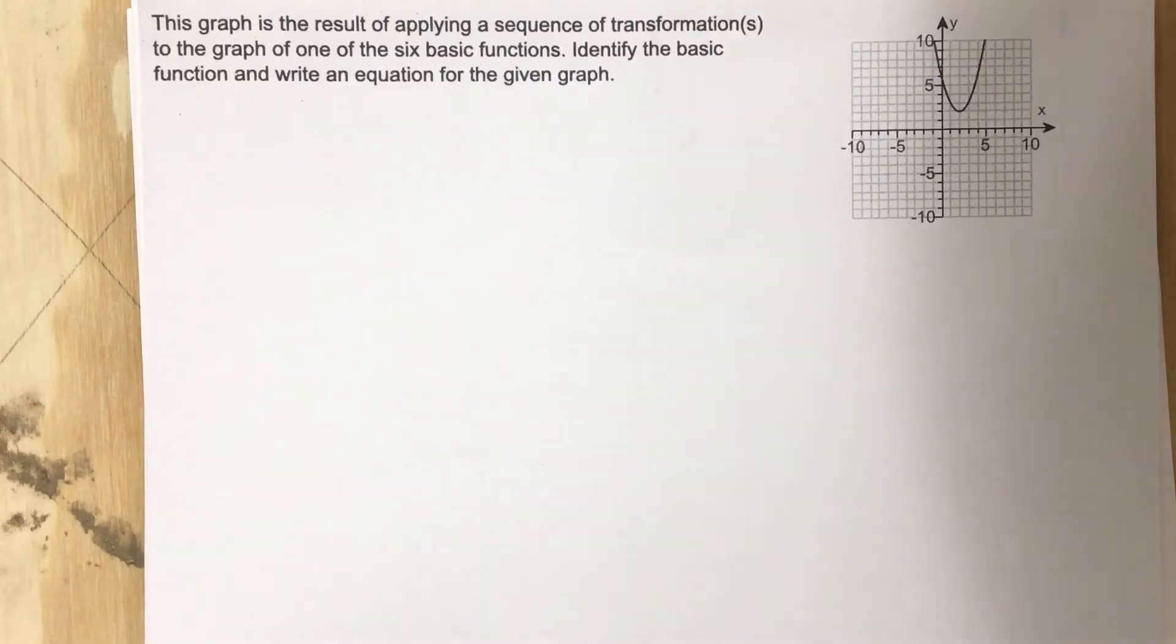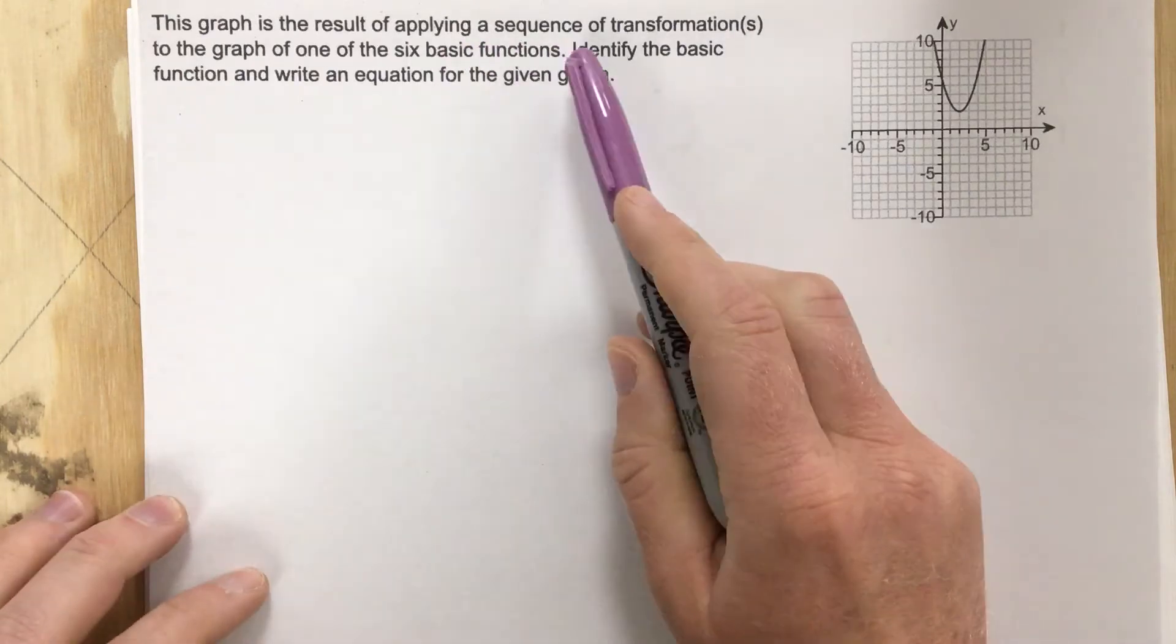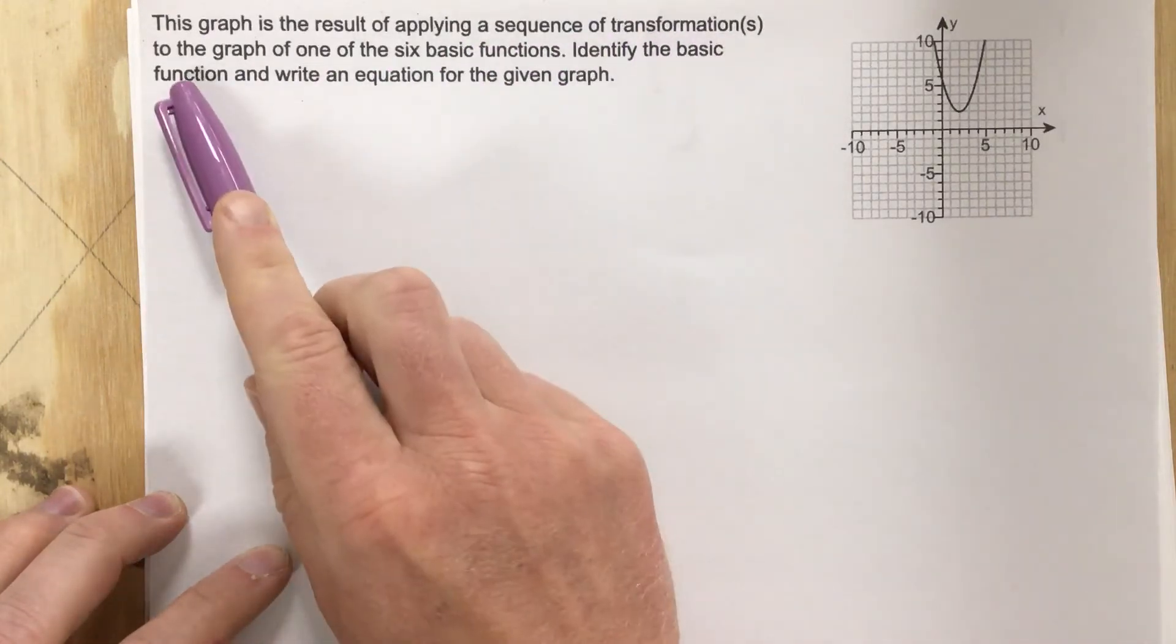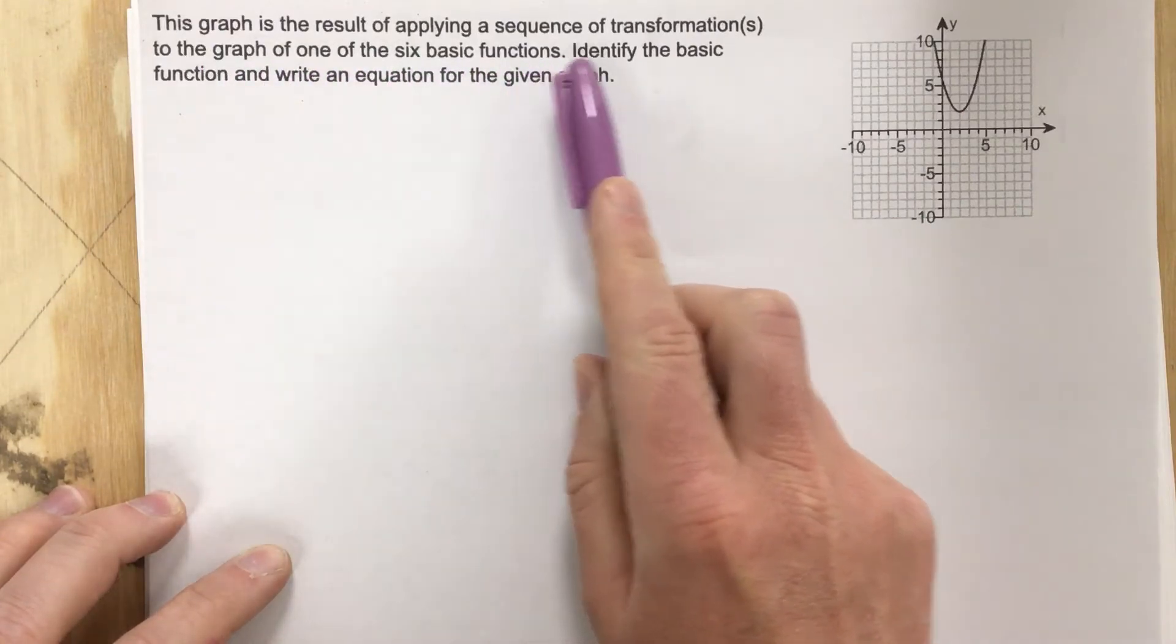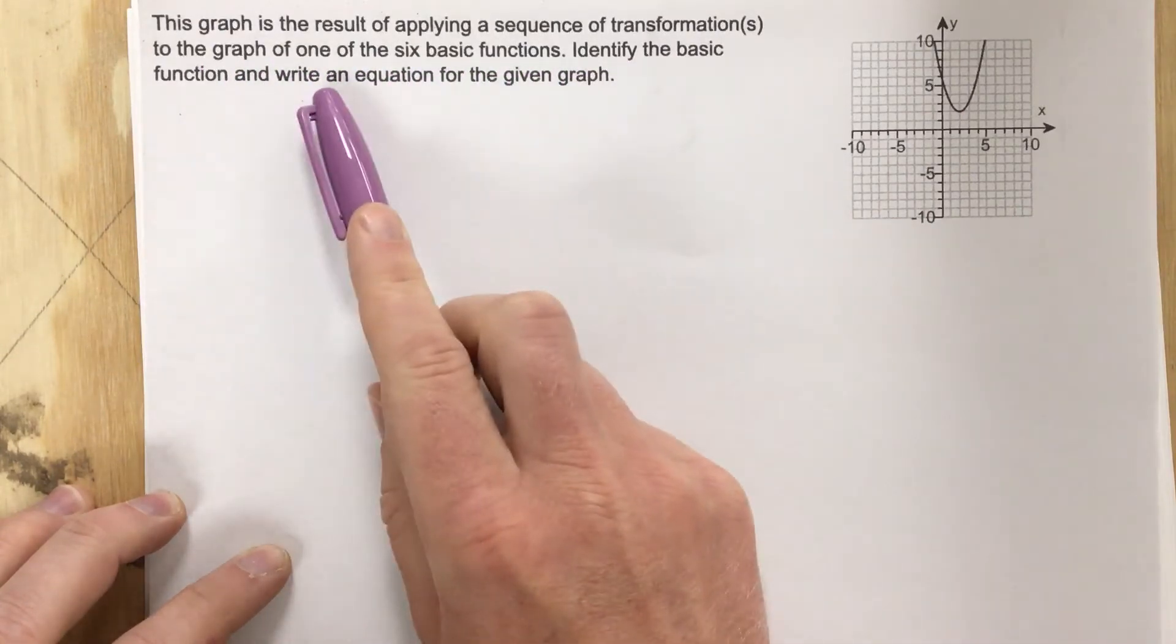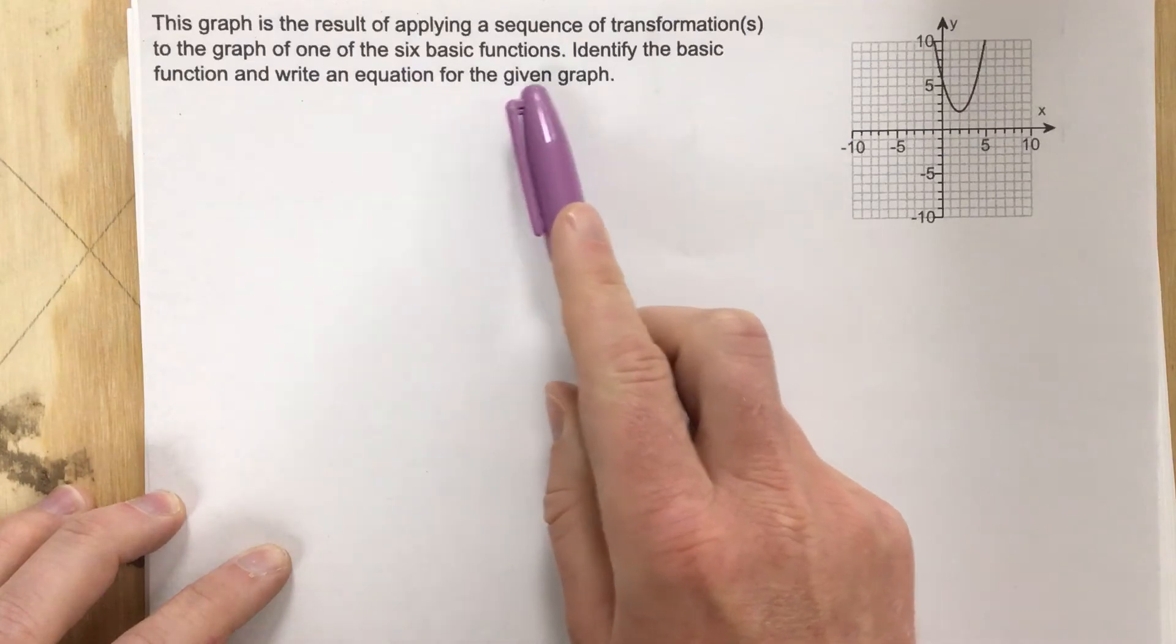This is problem number 7 from section 1.2. In this problem it says this graph is the result of applying a sequence of transformations to the graph of one of the six basic functions. Identify the basic function and identify an equation for the given graph.